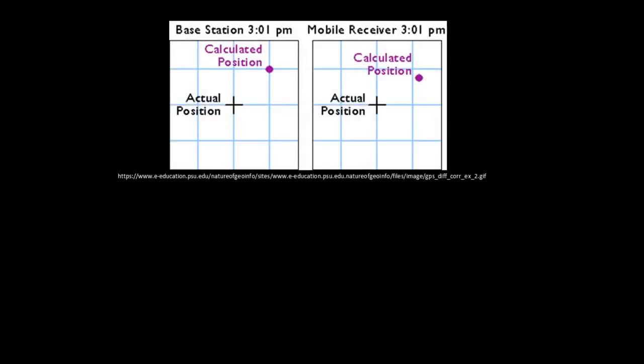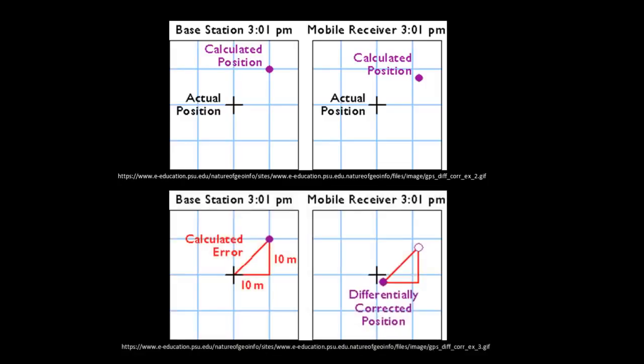The following images graphically demonstrate this idea. The top image shows the positions calculated at the same time instant by the base station shown on the left and the mobile receiver shown on the right. The base station calculates the correction needed to eliminate the error, in this case, a 10-meter error. The correction is then applied either in real-time or later with what is known as post-processing to correct mobile receiver calculated positions.